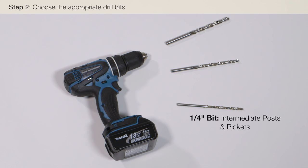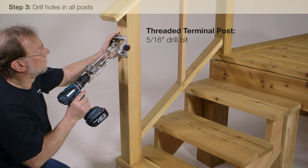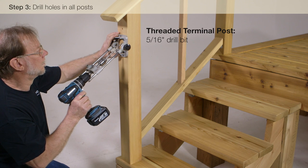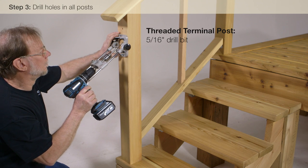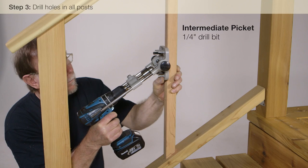A 1/4 inch drill bit will be used on intermediate posts and pickets and to pre-drill holes in the quick connect post. A 5/16 inch drill bit will be used on the threaded terminal post. A 3/8 inch drill bit will be used on the quick connect post. We start at the bottom stair post and drill angled 5/16 inch holes for the threaded terminal fittings. The angle we are using is the same as the slope of the stairs.